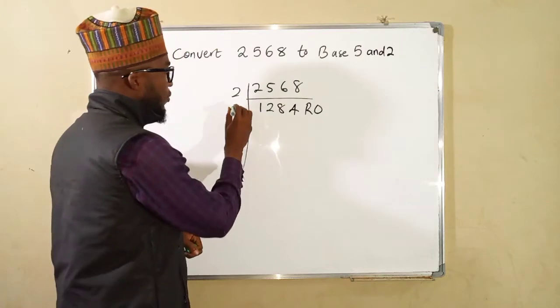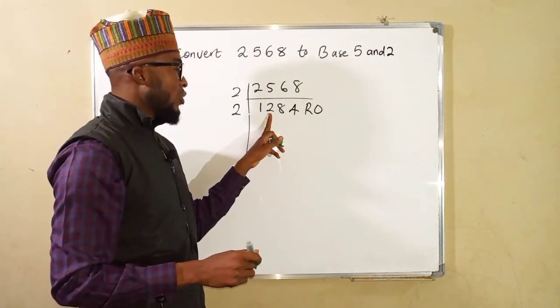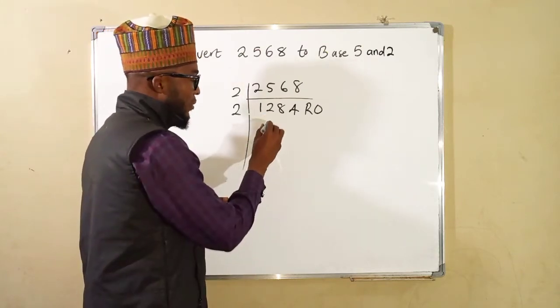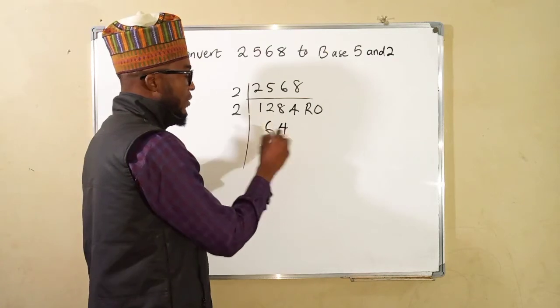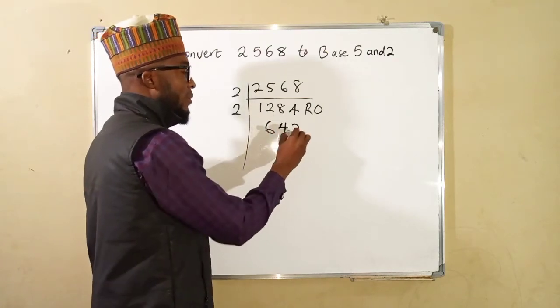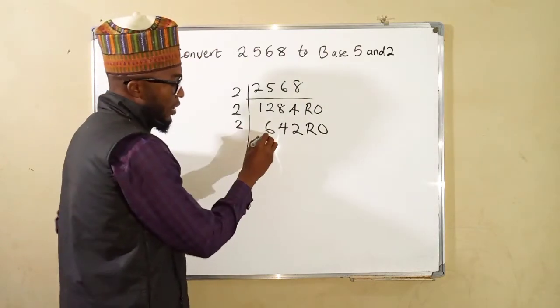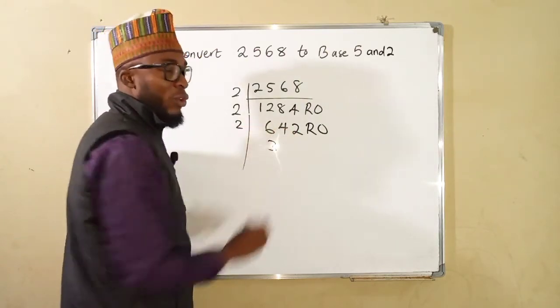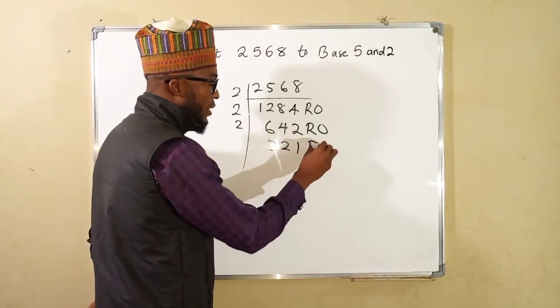We move again, 2 cannot go into 1 therefore we join them together to become 12. 2 can go into 12 six times, 2 can go into 8 four times, 2 can go into 4 two times, no remainder. 2 again can go here 3 times, 2 can go into 4 two times, 2 can go into 2 one time without remainder.